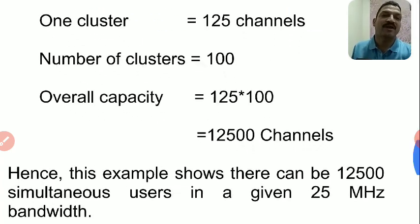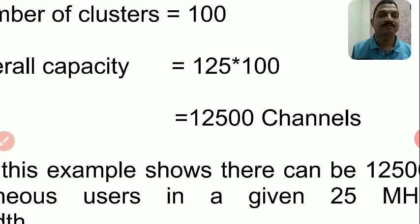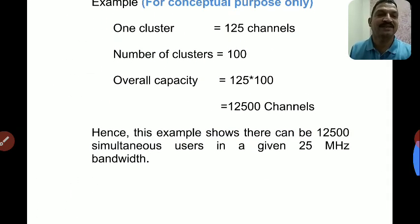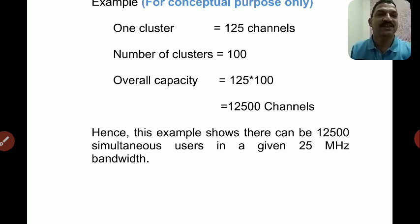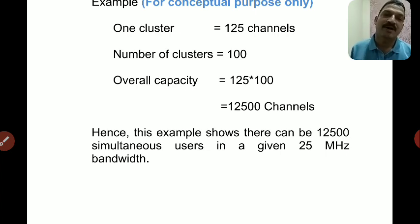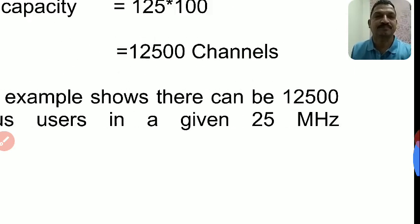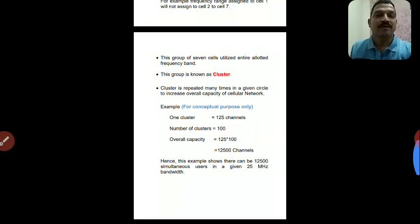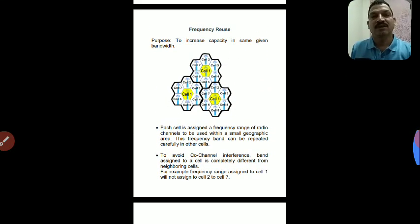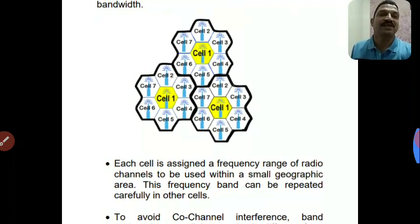This way, according to this example, we can provide 12,500 channels simultaneously. So in this way we can increase capacity through frequency reuse — from 125 voice channels, with frequency reuse we can use 12,500 simultaneously. With the provided bandwidth, using the cell and frequency reuse concept, our channel capacity increases significantly.